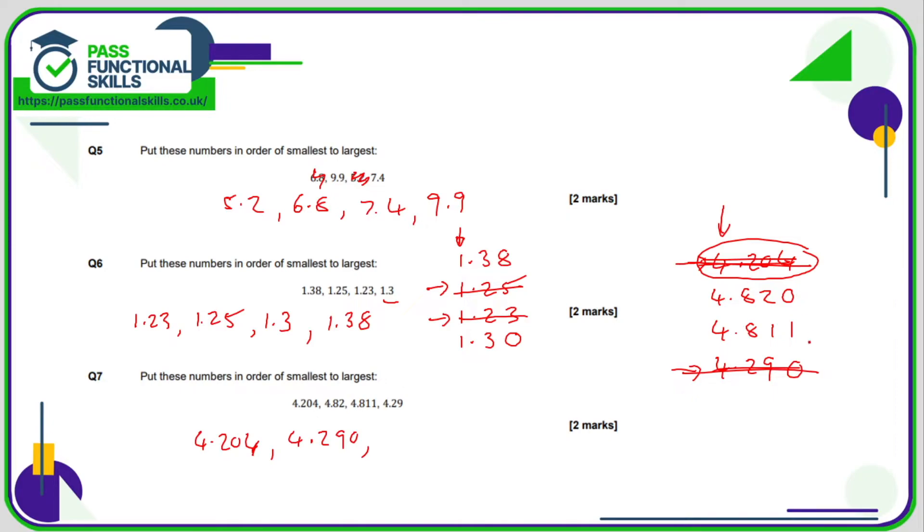So which one of these two is the next smallest? Everything has the same value in the units, everything has the same value in the tenths. But in the hundredths we've got a 2 and a 1. 1 is smaller than 2, so this is going to be the next smallest number, 4.811. Therefore the largest number is 4.820, except in the list it was 4.82. And for that matter this number in the list was 4.29 because it was us that added on the extra 0 just to make it easier to compare.